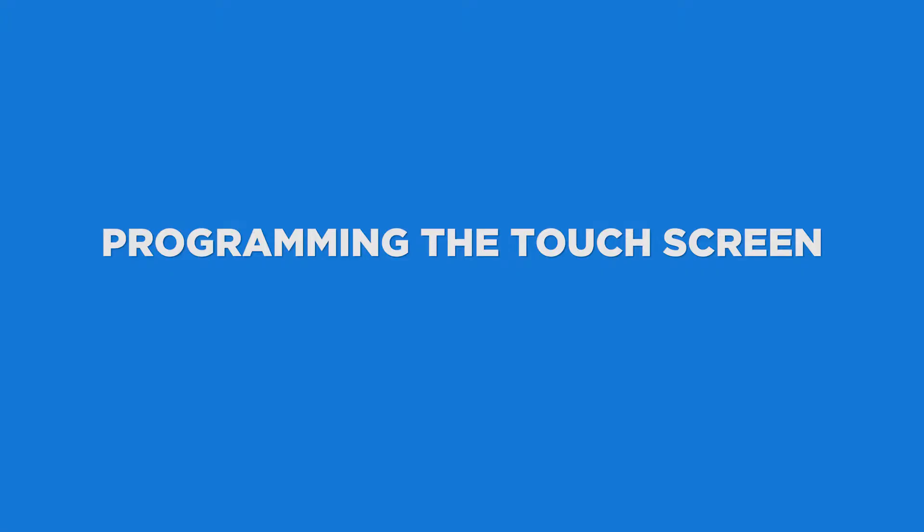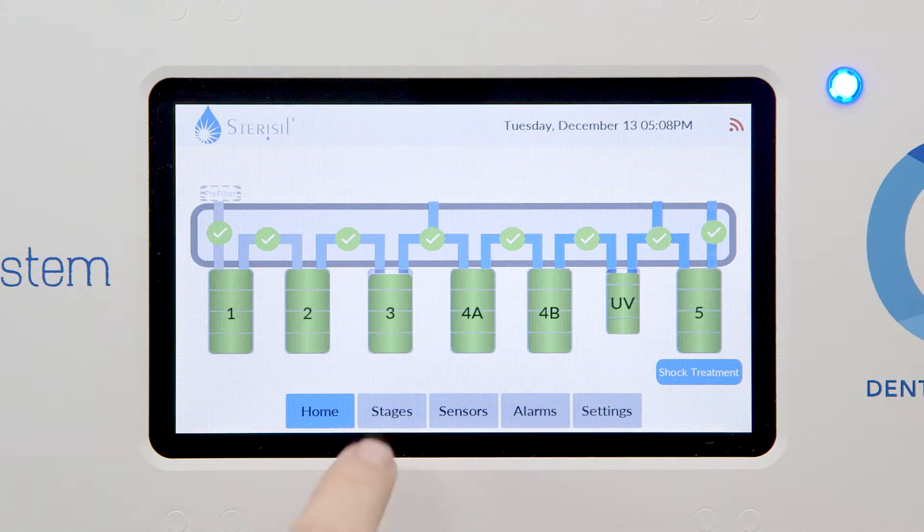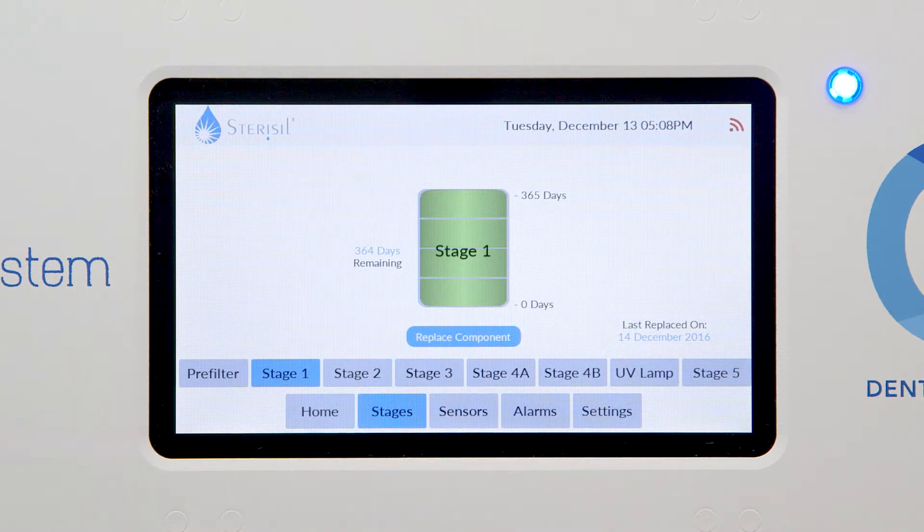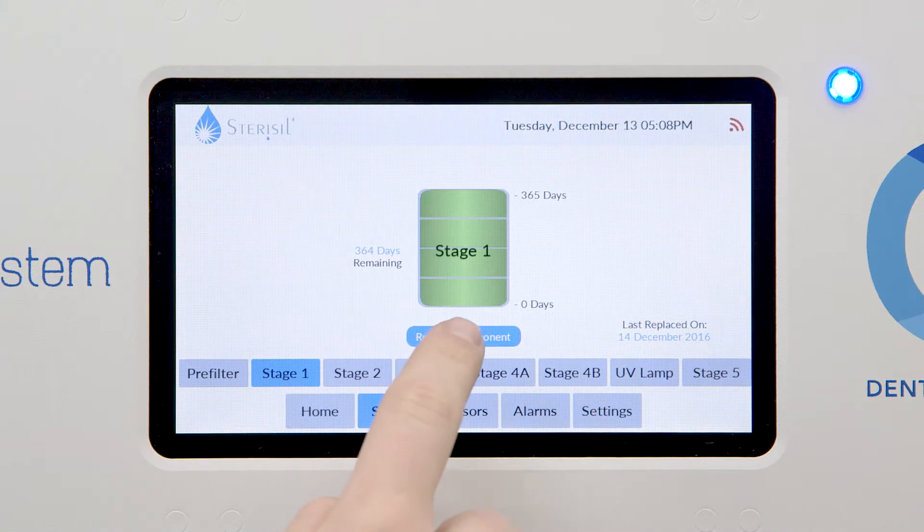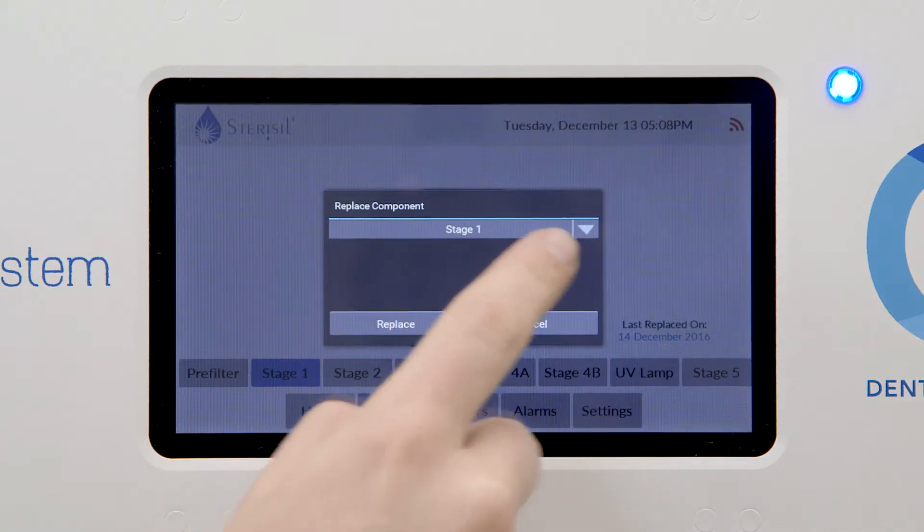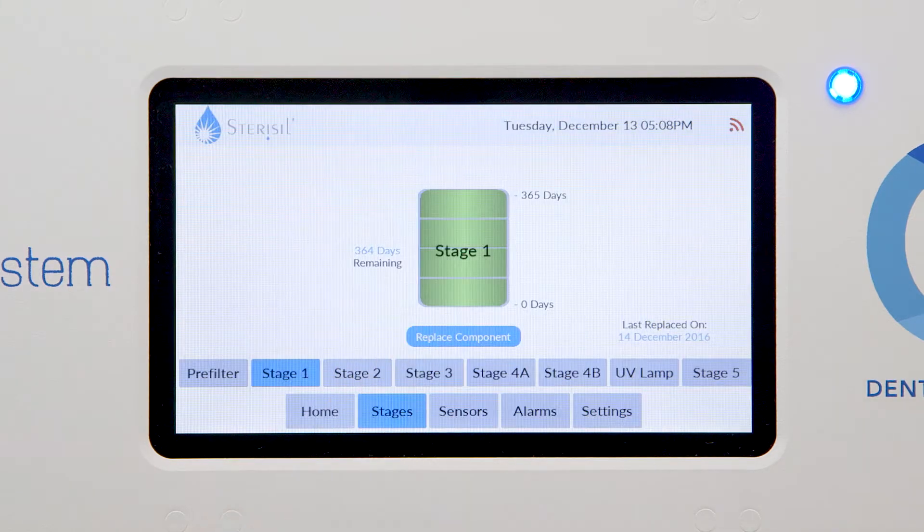Programming the touch screen. Start by bringing up the details view by touching either the desired stage number from the home screen or select the stages tab from the bottom row. Stage one's lifespan is for 364 days. If the counter is not reading 364 days, you'll select replace component. Select stage one from the drop down menu and hit replace.